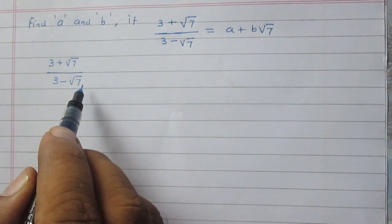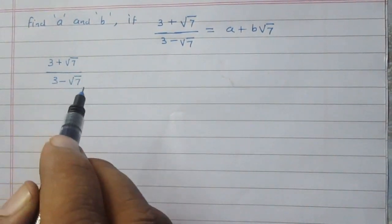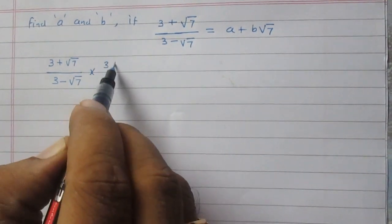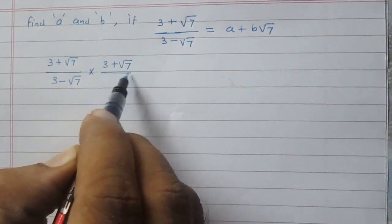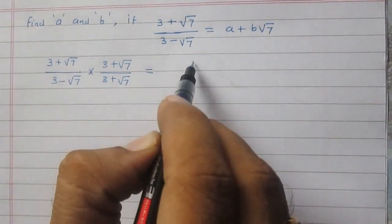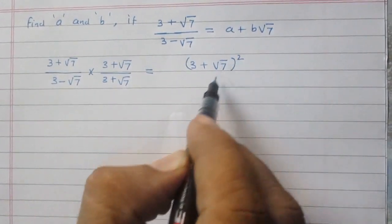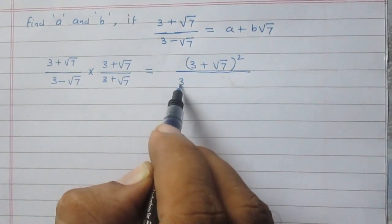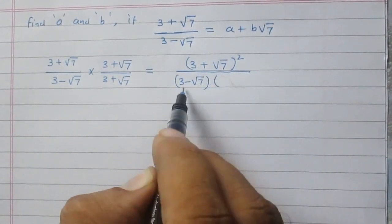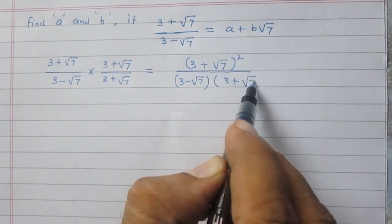In order to rationalize it, we will multiply both the numerator and denominator by (3 + √7). By doing so, we get (3 + √7) whole squared in the numerator, and in the denominator we have the multiplication of (3 - √7) and (3 + √7).